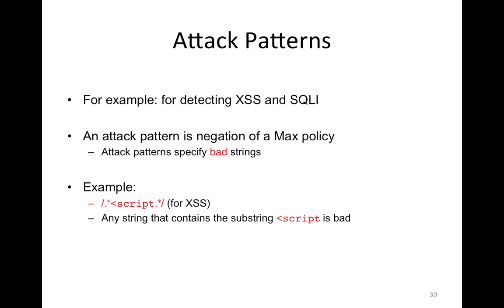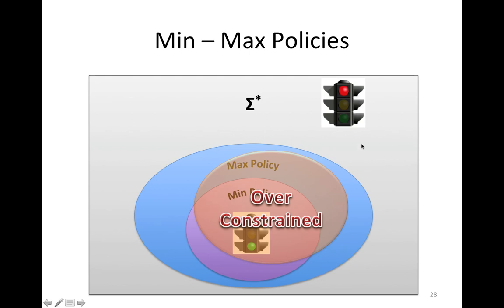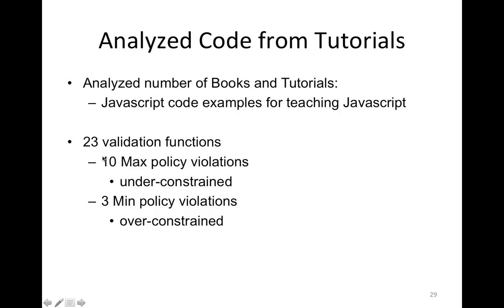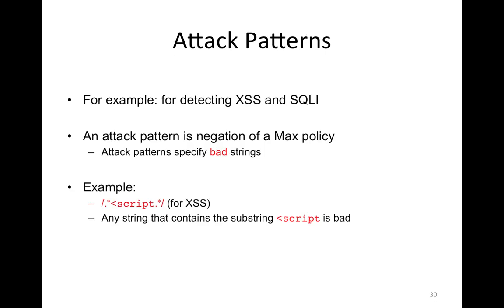We apply policy-based bug detection to find vulnerabilities — basically to find cross-site scripting and SQL injection vulnerabilities. In this case, we used attack patterns. An attack pattern is the negation of a maximum policy: it describes the set of strings that are bad, that you should not accept. The attack pattern describes the gray area — you must not accept and return any string in this gray area. An example attack pattern is a regular expression where any string that contains less-than followed by script is a bad string.